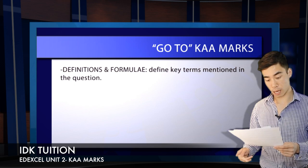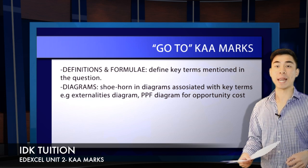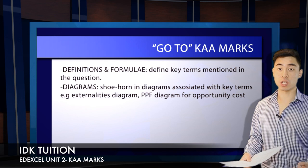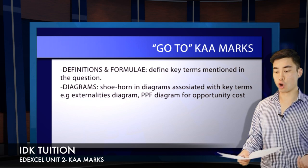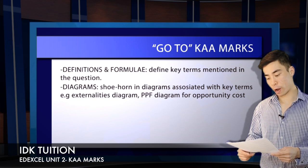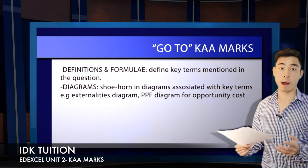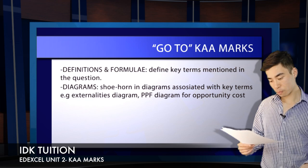Your second strand is diagrams. External costs and external benefits would be a good example. It doesn't necessarily need to be an analytical question. If related to the question there's a diagram you can draw, then draw it. If there's a question on external costs or external benefits, just draw that externalities diagram and you will get credit. Similarly, for opportunity costs, you can draw your production possibility frontier. You want to be shoehorning diagrams into as many KAA-style questions as possible.